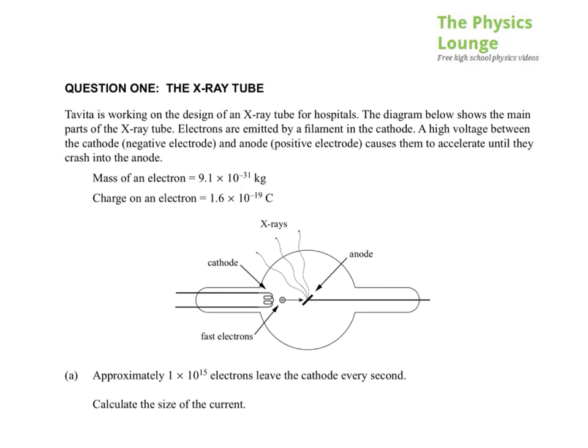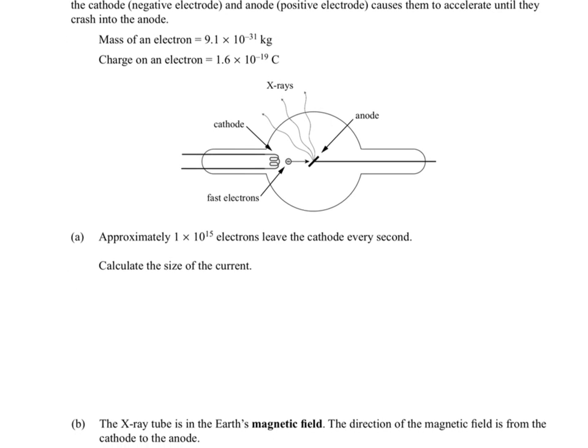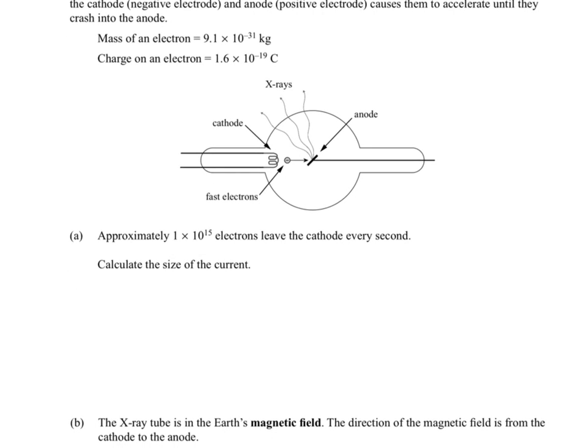Initially I'm not sure that those details are going to be hugely important. But to start with anyway, we've got approximately 1 times 10 to the 15 electrons leaving a cathode every second. And then calculate the size of the current.